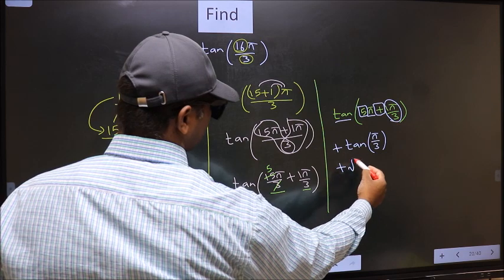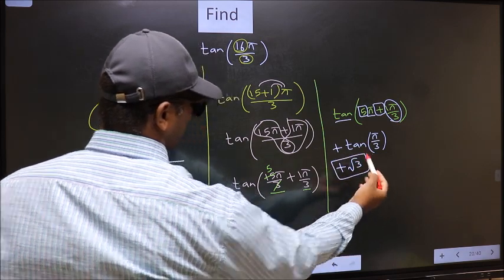So, plus tan pi by 3 is root 3. This is our answer.